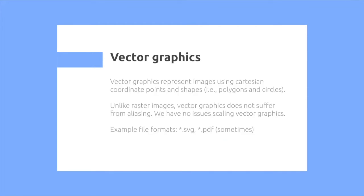vector graphics and raster images. Vector graphics represent images using Cartesian coordinate points and shapes, for example, polygons and circles.